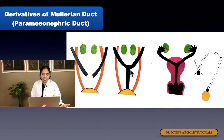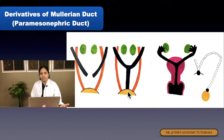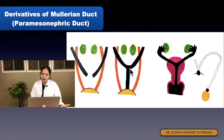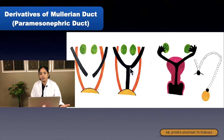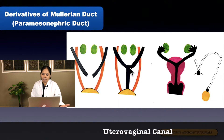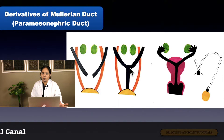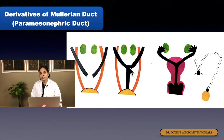The paramesonephric ducts of both sides are in very close relation and lie adjacent in the urorectal septum. Their caudal end enters into the dorsal wall of the urogenital sinus, forming a bulging called the Mullerian tubercle or Mullerian eminence. By the fusion of the caudal part of both paramesonephric ducts, one canal is formed — the uterovaginal canal.